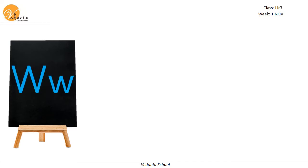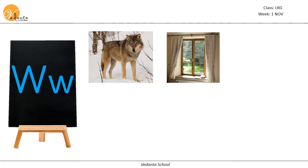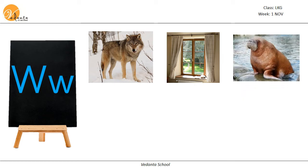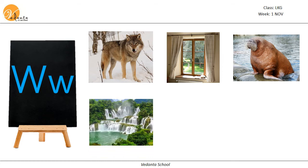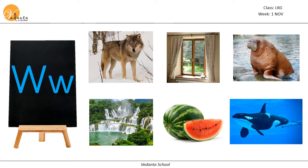This is the letter W — uppercase W and lowercase W. The letter W makes the sound 'w'. Now let us look at a few words that start with the 'w' sound: W — wolf, W — window, W — walrus, W — waterfalls, W — watermelon, W — whale.